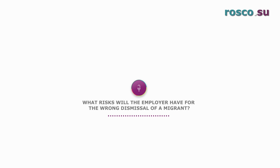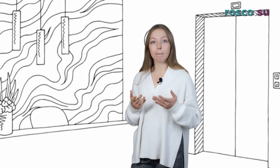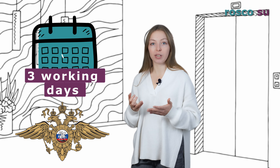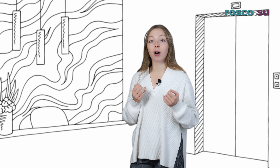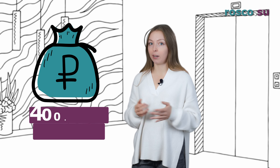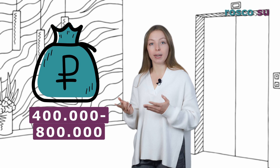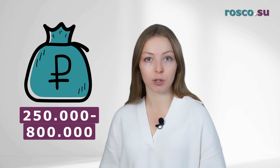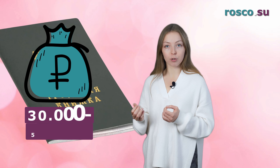What risks will the employer face for the wrong dismissal of a migrant? The employer must report the fact of dismissal of the migrant within three working days to the territorial office of the Ministry of Internal Affairs. Ignoring this obligation or violating the deadline will cost the employer dearly. For a company, a fine from 400,000 to 800,000 rubles is possible. If a migrant has an expired patent or work permit and the employer did not remove or dismiss him in a timely manner, the fine is from 250,000 to 800,000 rubles. For Moscow or Saint Petersburg, the fine reaches 1 million rubles. Additionally, if an employer incorrectly makes an entry in a migrant's workbook, they can be fined from 30,000 to 50,000 rubles.